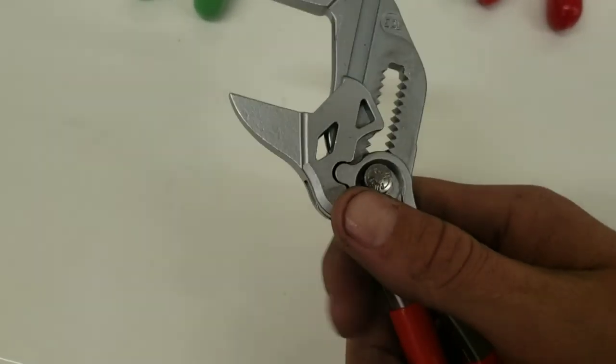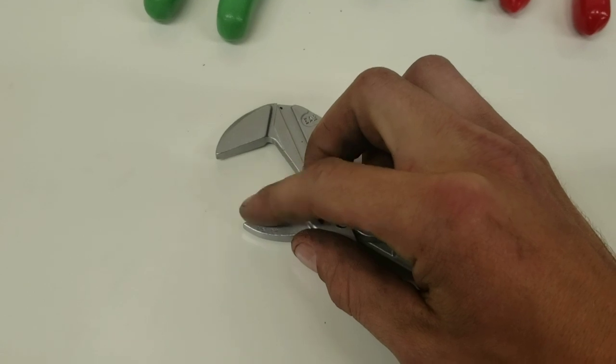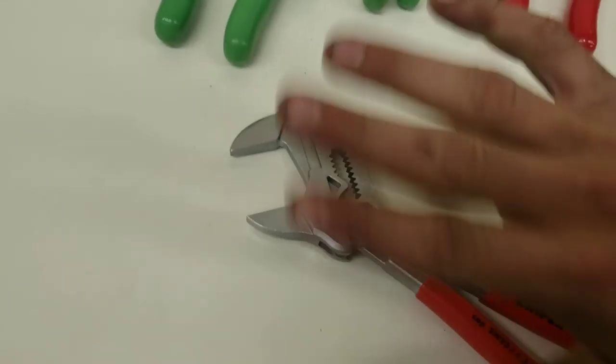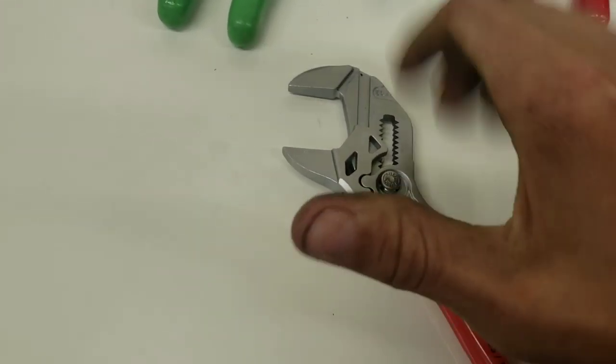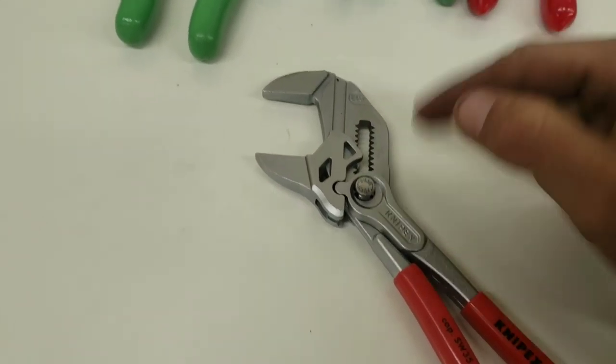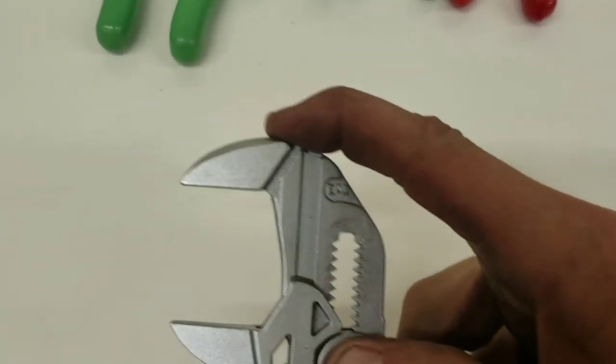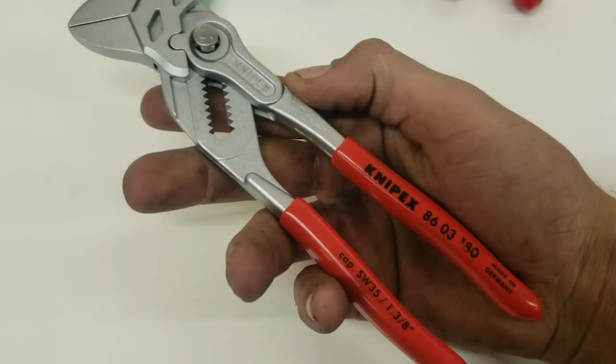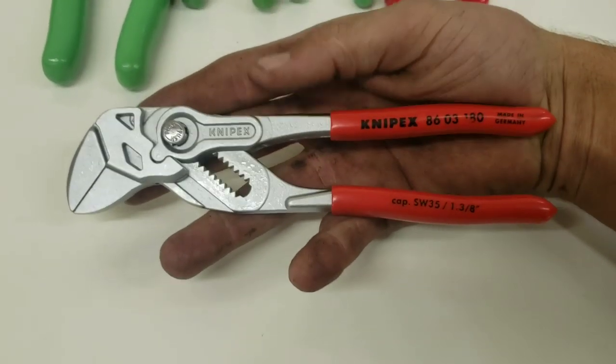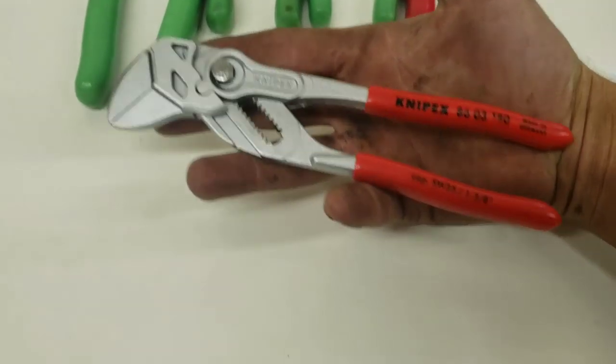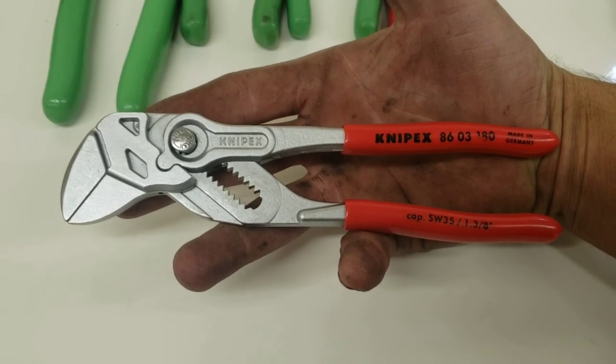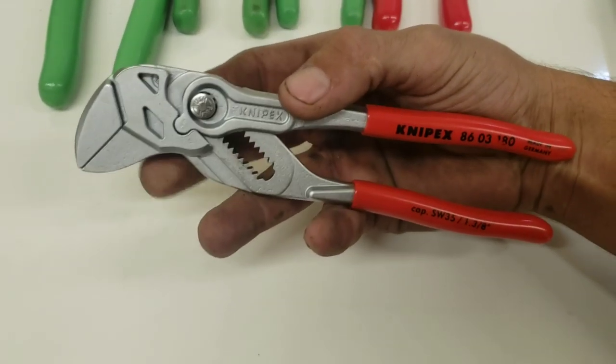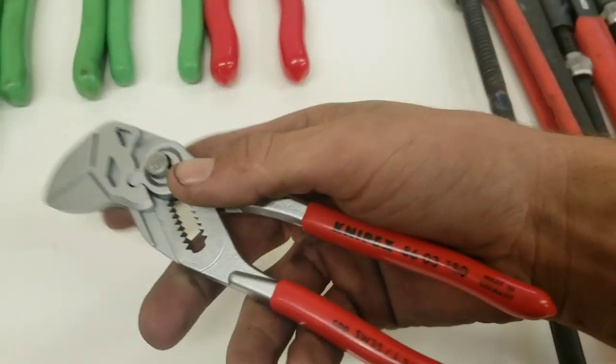I've got all kinds of Knipex pliers. Their hose clamp pliers are amazing - they lock in place so you don't have to hold pressure. These are some of the best pliers you can get, made in Germany. The Snap-on truck has them but they're more expensive. You can find them on Amazon, eBay, and stores like Menards carry a wide variety.